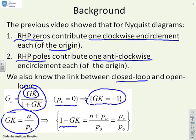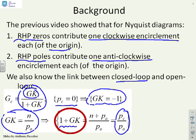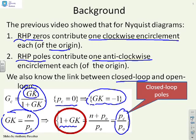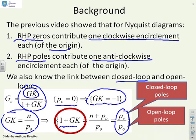With some simple algebra, 1 plus Gk equals N plus P0 over P0, which is PC over P0. PC represents the closed-loop poles, and P0 represents the open-loop poles. So 1 plus the open-loop gives you closed-loop poles divided by open-loop poles. You'll also notice there's no mention of the zeros — they don't come into this. The zeros have disappeared.